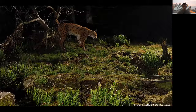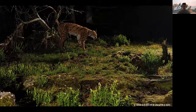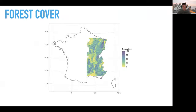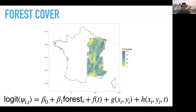As a case study, we considered a large carnivore, the Eurasian lynx, because knowing where these animals are can help in mediating conflicts with human activities. Here are the lynx detections for three years on the map, from 1994 on the left to 2016 on the right. We used forest cover as a covariate, possibly explaining spatial variation in occupancy, and also accommodated smooth temporal variation unexplained by forest cover using GAMs with our new model.